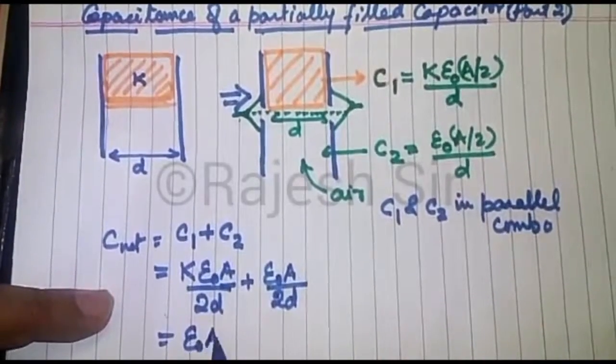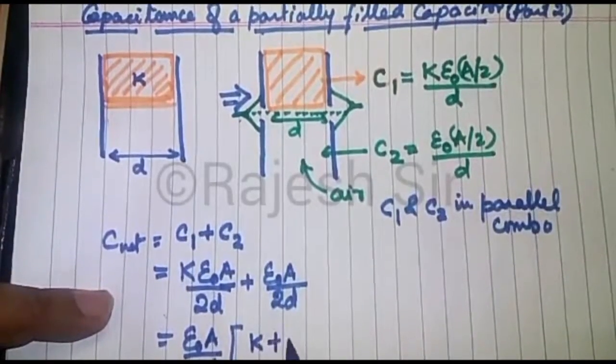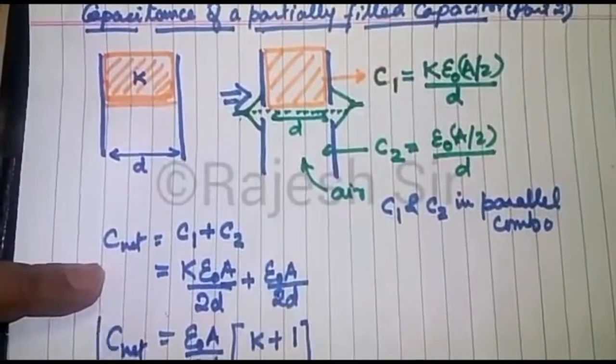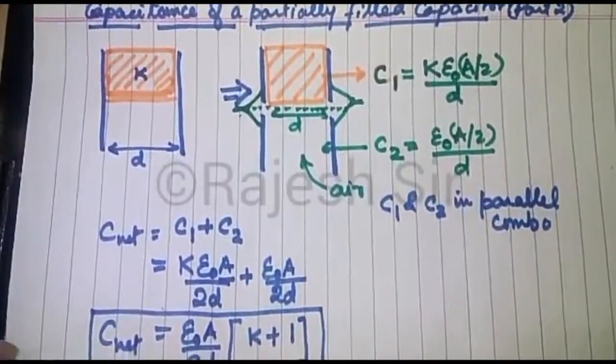Now you can take epsilon naught A by 2d outside, so this will be K plus 1. So the C net of such type of capacitance can be obtained by this particular expression.